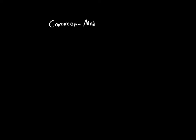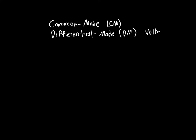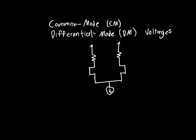In this video I want to talk about common mode and differential mode voltages — or more generally signals, because we can have voltages or currents. Common mode and differential mode only have meaning when we're applying more than one signal. I've drawn a differential pair here as one example, but we can have any circuit where we apply multiple voltages or currents, with some voltage v1 on the left and some voltage v2 on the right.